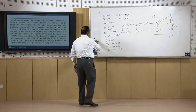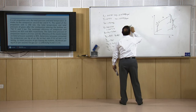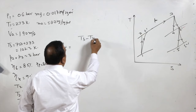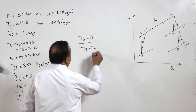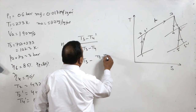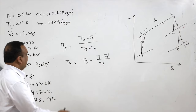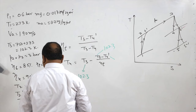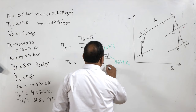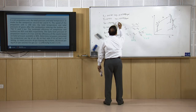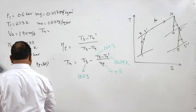With T_4' = 861.9 K and turbine isentropic efficiency of 80%, we use: η_t = (T_3 − T_4')/(T_3 − T_4) = 0.8. Rearranging: T_4 = T_3 − (T_3 − T_4')/0.8 = 1023 − (1023 − 861.9)/0.8, giving T_4 = 821.6 K.